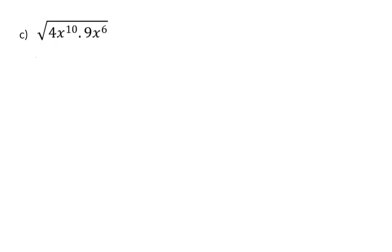In example C we are going to simplify on the inside first by multiplying. 4 times 9 is 36 and for the variable we add up the exponents to get 16. Determining the square root gives the square root of 36 which is 6, and for the variable we divide the exponent by 2 to get 8.